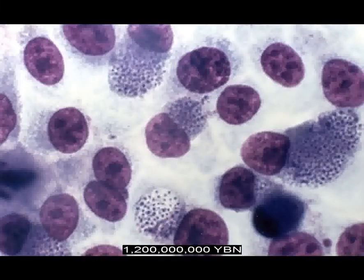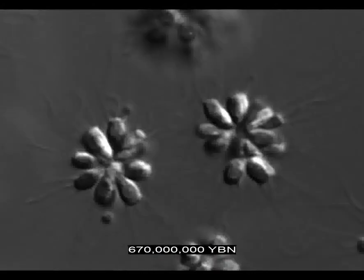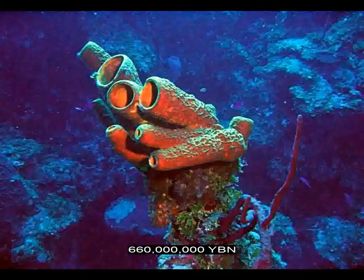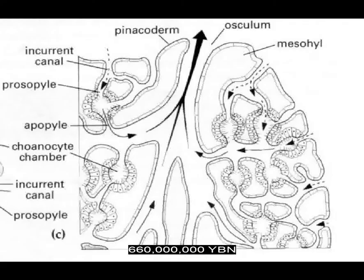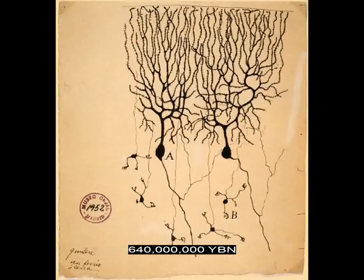First fungi. Eukaryote I. First three-dimensional response to light. Multicellularity evolves in a free-moving protest. This allows larger free-moving organisms to evolve. First animal and first metazoan. Sponges. Male gonad. Animal cells group as tissues. First nerve cell, neuron, and nervous system.